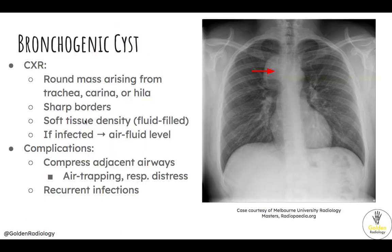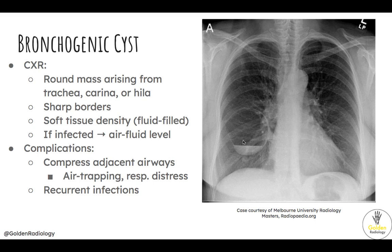Bronchogenic cysts will typically present like this — a round, soft tissue mass with sharp borders arising from the trachea, carina, or hila on either side. These cysts are typically asymptomatic; however, they can get infected, in which case they may show an air-fluid level, as shown here. They can also have a mass effect compressing adjacent airways, which leads to air trapping and respiratory distress.